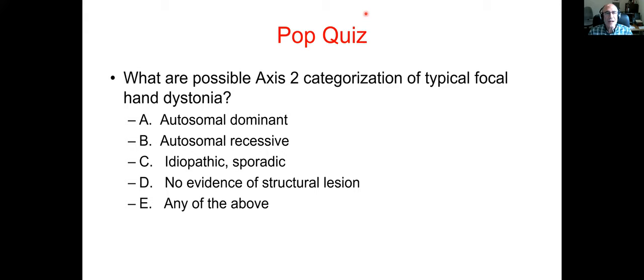I'm now going to talk about intracortical inhibition, one type of inhibition that can be seen in the motor cortex in these patients, which can be done with transcranial magnetic stimulation. TMS is given to the motor cortex and a motor evoked potential can be found. A conditioning stimulus is a low-amplitude stimulus that produces no motor evoked potential on its own, but if given just before the test stimulus, the motor evoked potential is reduced. So the conditioning stimulus has produced inhibition within the motor cortex, leading to a decreased amplitude.